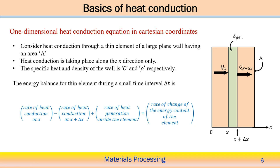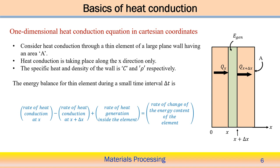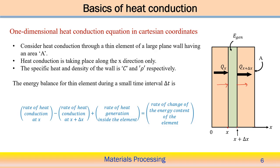Now we look into the one-dimensional heat conduction equation in the Cartesian coordinate system. We consider heat conduction through a thin element at distance x and at distance x + Δx. The heat transfer at position x is q_x and at position x + Δx is q_(x+Δx). The material has specific heat c and density ρ. We assume heat conduction takes place along the x-direction only, with heat generation inside the element and cross-sectional area A.